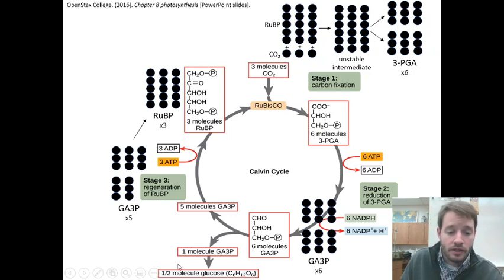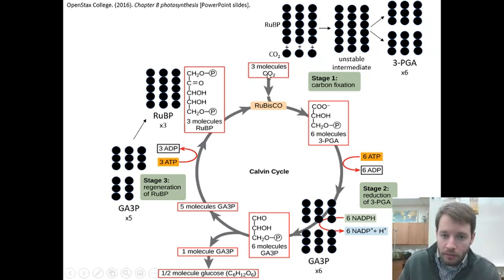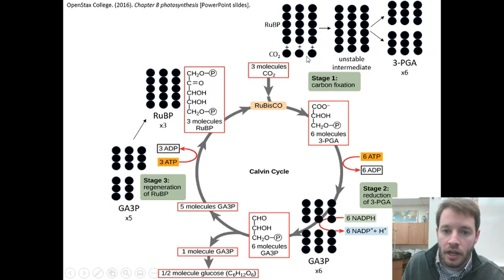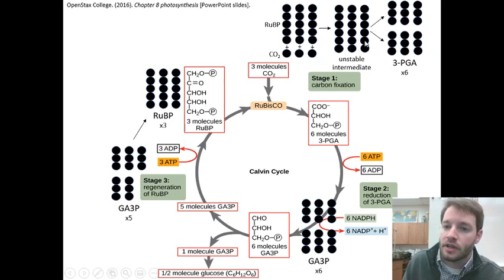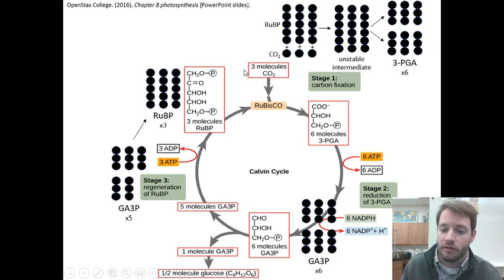Once we have two of those GA3Ps, we could start creating carbohydrates like glucose, fructose, or even longer polysaccharides like starch. The Calvin cycle can only fix one carbon dioxide at a time, so it actually has to go through six times for an entire glucose molecule, or three times for one GA3P molecule. We take the carbon dioxide, fix it to the five-carbon chain, creating an unstable six-carbon chain that breaks into six three-PGA molecules. Those get reduced to the higher-powered GA3P molecules, one of which is used to produce glucose; the remaining five get recycled back to the beginning of the cycle.